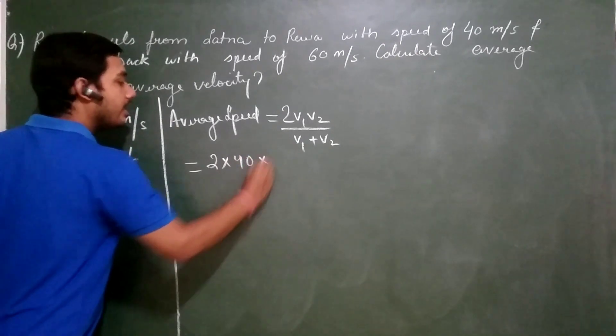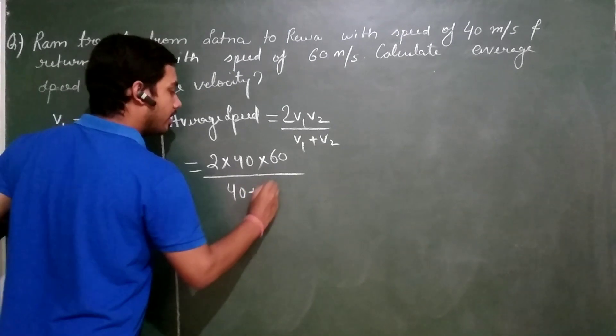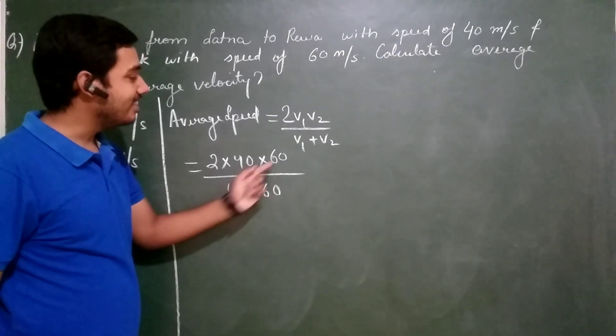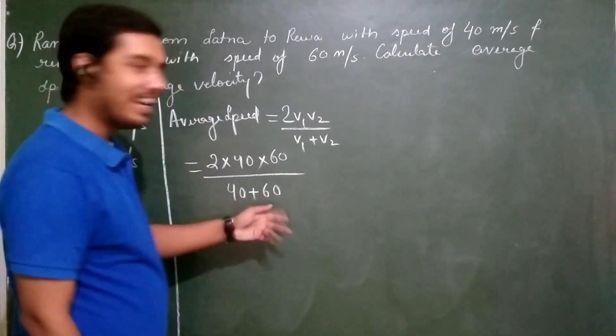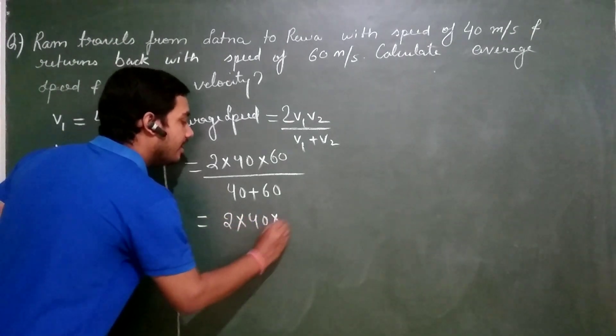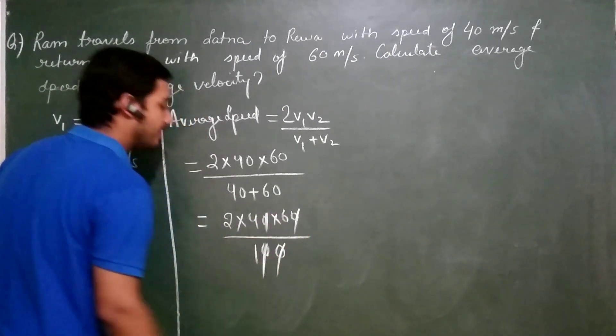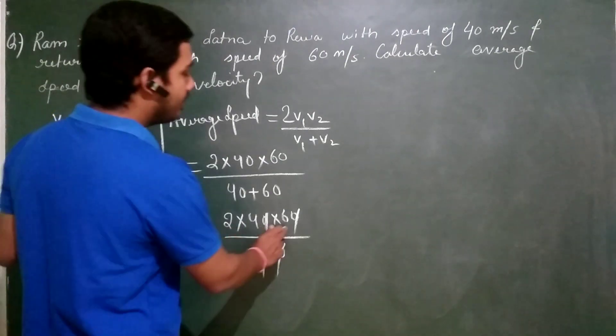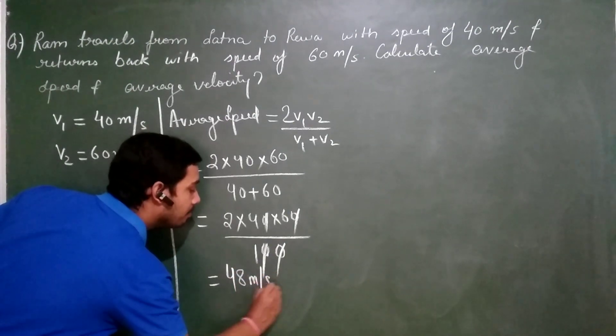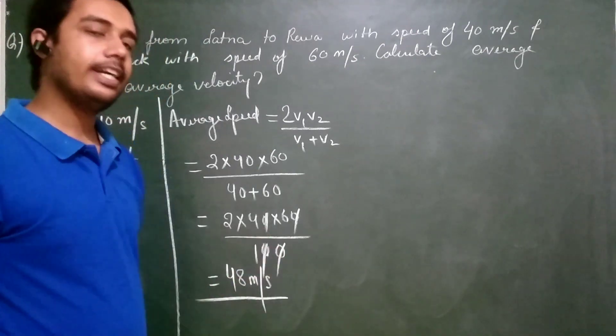2 into 40 into 60 upon 40 plus 60. Remember, don't cancel 40 and 60 directly - that is wrong. First add them, then you have to cancel. 2 times 40 times 60 upon 100. Canceling zeros: 2 times 4 is 8, times 6 is 48 meter per second. That is the answer. So what is the average speed? 48 meter per second.